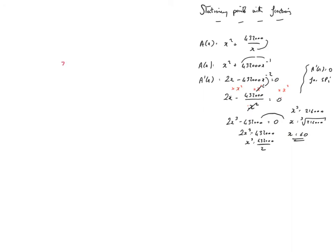My next move is to set up the nature table. So it's going to be x, A dashed x and slope. I know that I've got a stationary point when x equals 60, so that will give me 0 gradient. A neighboring value that approaches 60 might be 59. A neighboring value that moves away from 60 might be 61.